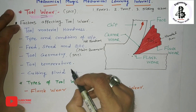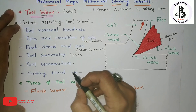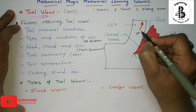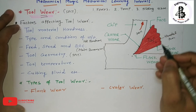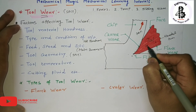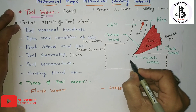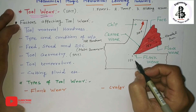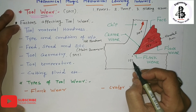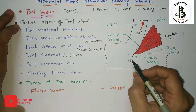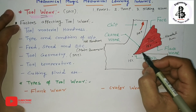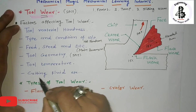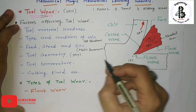Tool temperature is also a factor. In the cutting zone, the chips take 70% of the heat, the tool takes 15%, and the workpiece takes 15%. By taking care of these temperatures, you can easily control the wear.